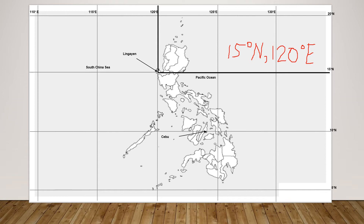When you say South China Sea, where is the South China Sea? Its location is 15 degrees north — it's still on the same 15 degrees north latitude — and its longitude is 115 degrees east. So the location, therefore, is 15 degrees north, 115 degrees east. That's the location of South China Sea.